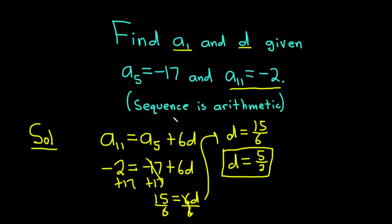Now we just have to find the first term, which is a₁. To find the first term, we can use either a₅ or a₁₁. Let's just use a₅. We can create an equation: a₅ is equal to a₁. And then we have to ask ourselves: how many times do we have to add d to a₁ to get to a₅? Four times. So 4d.